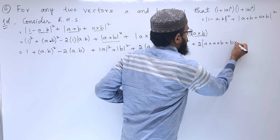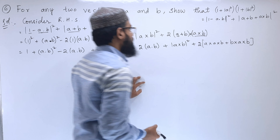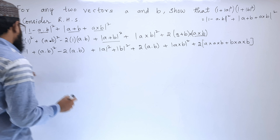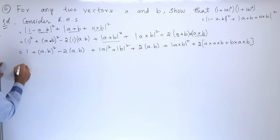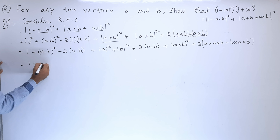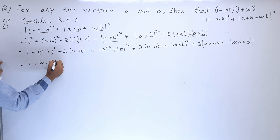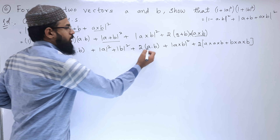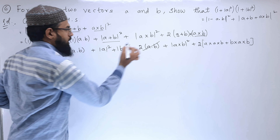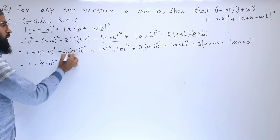Next, we need to expand |a + b|². So, |a + b|² = |a|² + |b|² + 2(a·b).